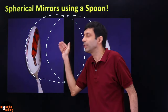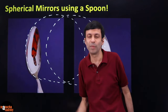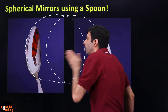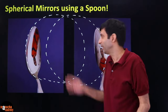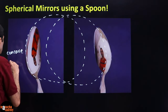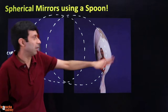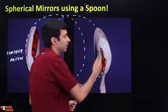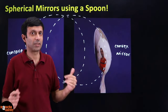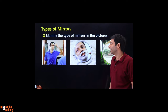If you flip the spoon and look at the back, it bulges outward — you cannot enter it like a cave. This bulging outward surface is called a convex mirror. So spherical mirrors are of two types: concave and convex. They are curved mirrors, part of a larger sphere — not flat.